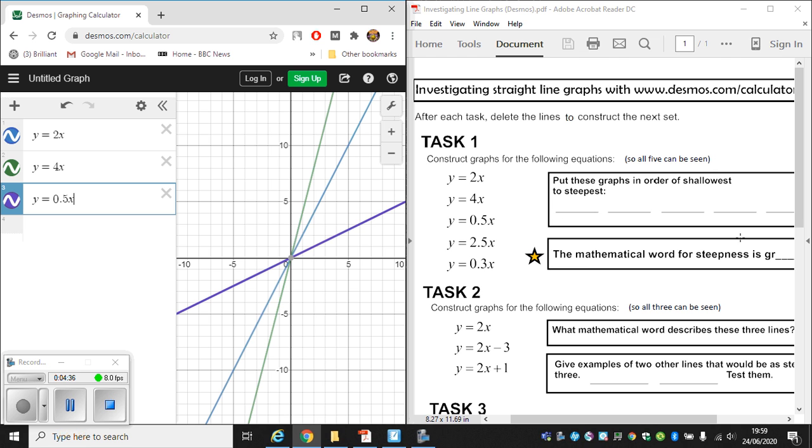Now what we're asked to do here in this little box is to put these graphs in order of shallowest to steepest. Whichever of these five graphs produces the shallowest graph. So if I have a look at these three that we've got at the minute, the shallowest is the one which we last constructed, which is y equals 0.5x. It's the most shallow of the bunch. The steepest that we've got was y equals 4x. That's the one that increases the quickest. So in order we would have y equals 0.5x, then y equals 2x, and then y equals 4x. But we need the order for all five graphs. So we need all five graphs in Desmos. And then we can decide on what the order is.